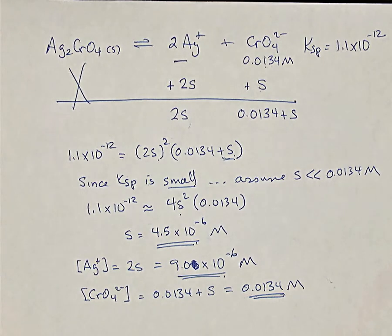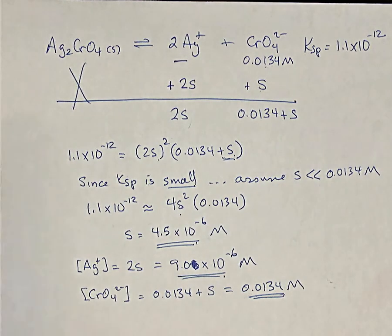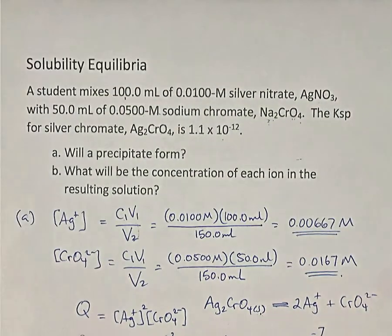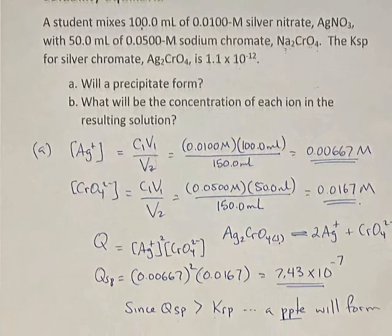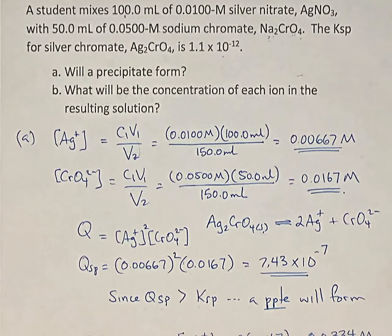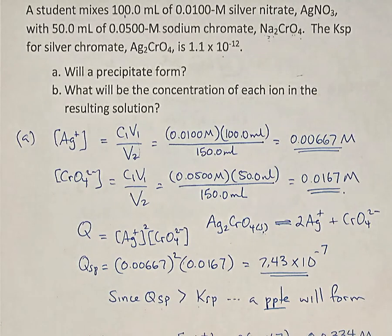Part B is a more advanced problem for AP chemistry. Part A — determining whether a precipitate forms using QSP vs KSP — is a question that could appear on both an AP exam and a regular grade 12 chemistry exam.